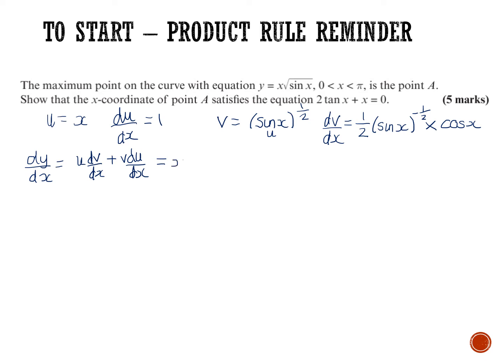Now because I've written those four things out at the top, it's easy to pick out the bits I want. So u times dv/dx — dv/dx is that whole thing, so I write x over 2 sine x to the minus a half cos x. That's the u dv/dx term, plus v du/dx which is sine x to the half times 1.